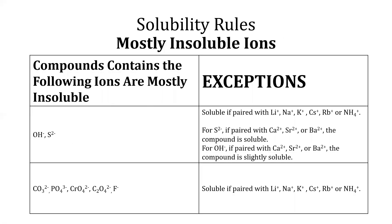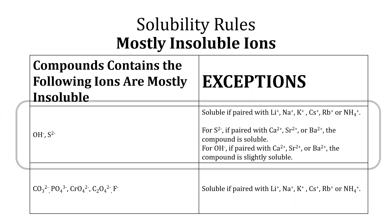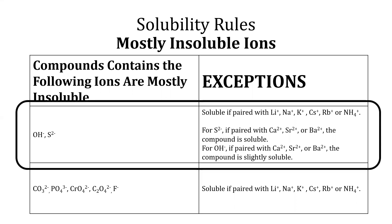This table here shows the ions that are mostly insoluble in water. Salts of hydroxide ions and sulfide ions are mostly insoluble in water unless paired with any of the alkaline metal ions or ammonium ions, where they are considered soluble in water. Additionally, sulfide salts containing calcium ion, strontium ion, or barium ion are soluble in water.